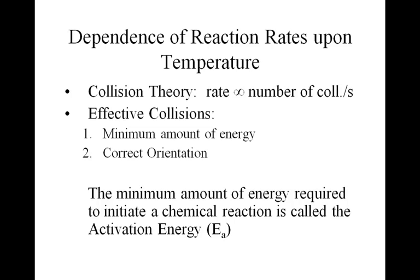A collision must also be effective — that's one of the things that affects the rate of the reaction beyond just the number of collisions per second. Just because two molecules collide doesn't mean that collision results in a reaction. What makes a collision effective is two things. One, they must have the minimum amount of energy necessary for the reaction to occur, because when the molecules collide, the old bonds have to break and the new bonds have to form. Breaking old bonds requires energy, so those collisions have to have a minimum amount of energy to break the bonds.